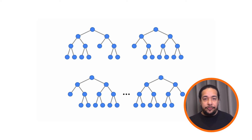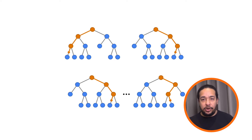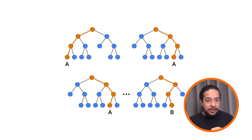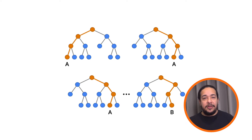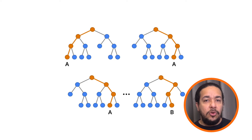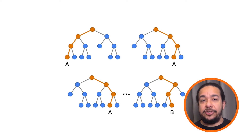The inference of a random forest, for example in a multi-class classification problem, works like this: each tree votes for a single class, and the random forest prediction is the most voted class. So, what does a random forest look like in action?